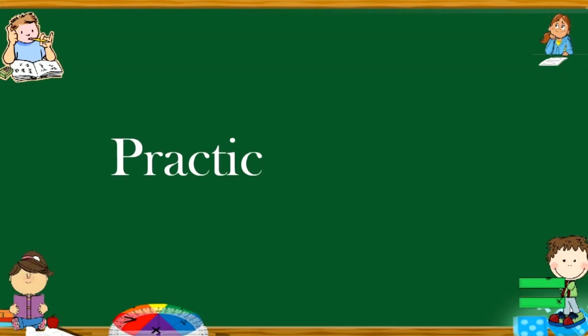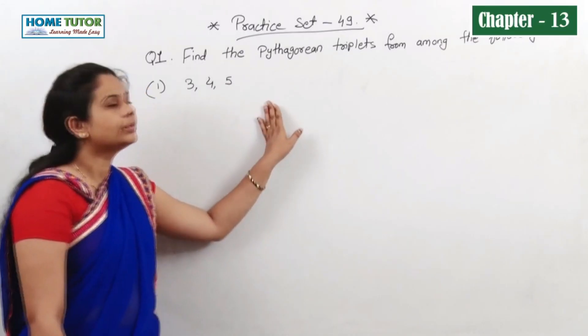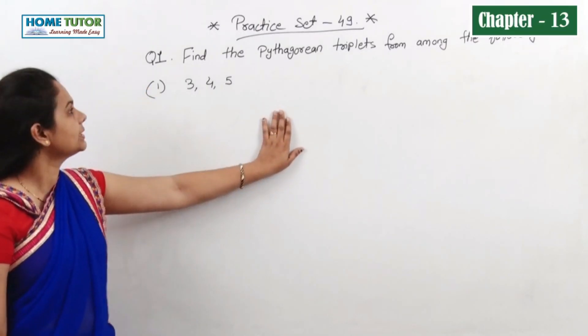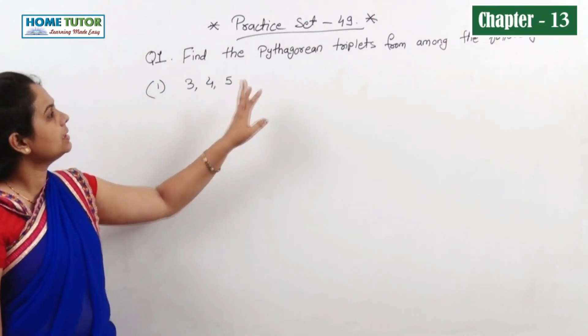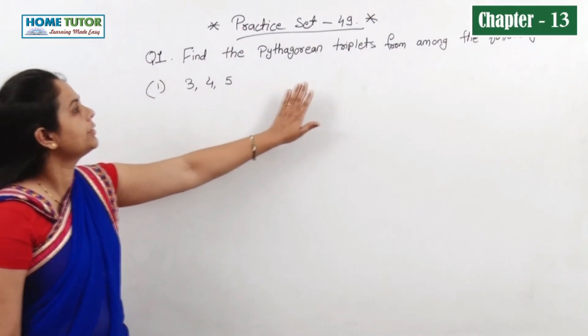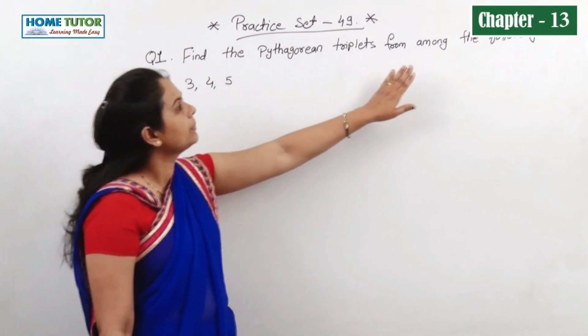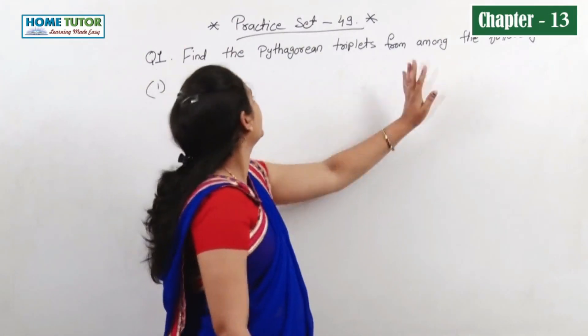Friends, now let's start the next practice sets. Practice set number 49. In the first question: find the Pythagorean triplet from among the following.